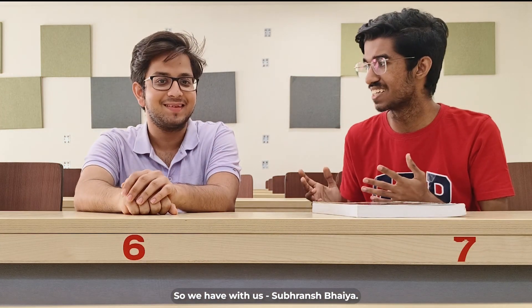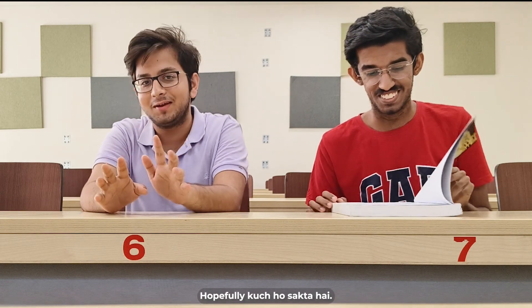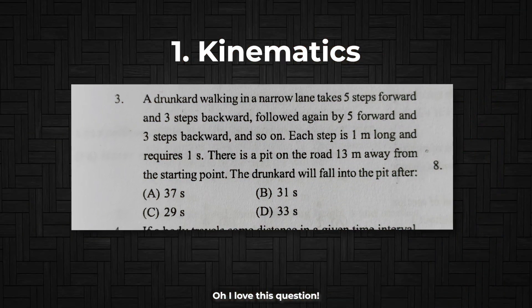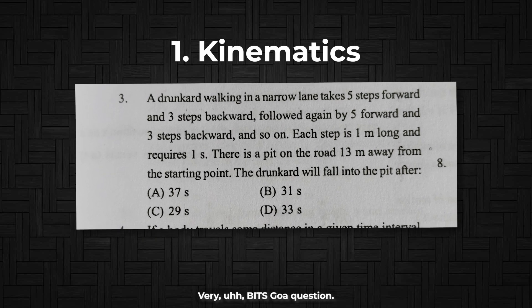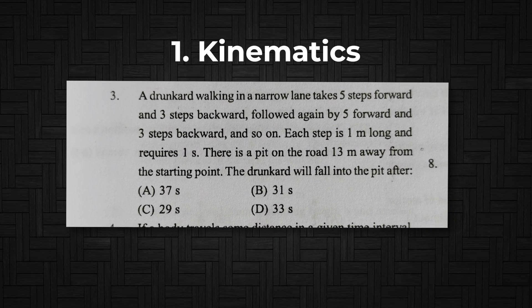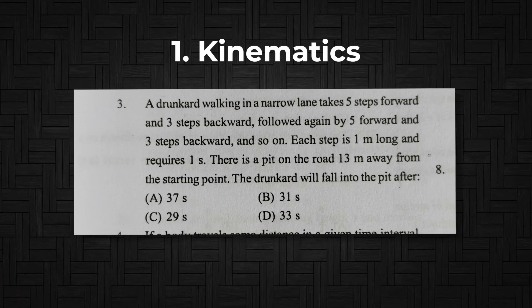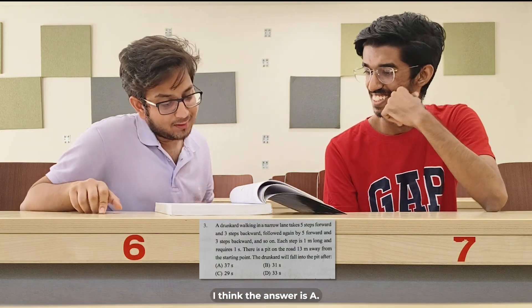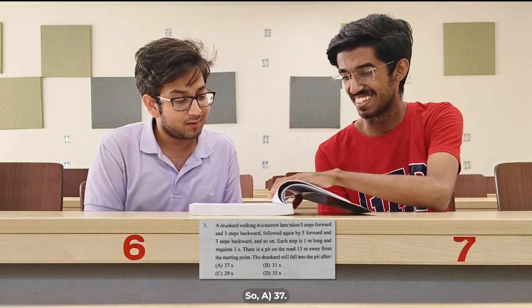So we have with us Subranj Bhaiya — he's a third year doing a dual degree in chemistry plus two. Pick your three chapters. From chemistry: haloalkanes and haloarenes. From physics: kinematics. From maths: limits. Hopefully it will show us better. I love this question — very Bits Goa version. An anthropological walking in an anointing takes five steps forward and three steps up. I'm not sure where I'm going, but I think the answer is A — at least seven, probably seven.